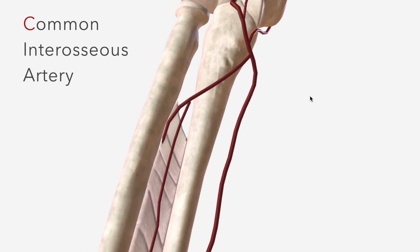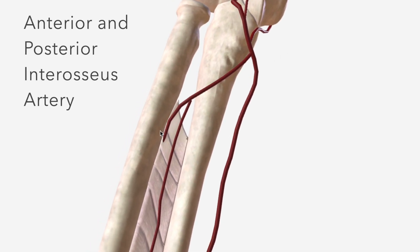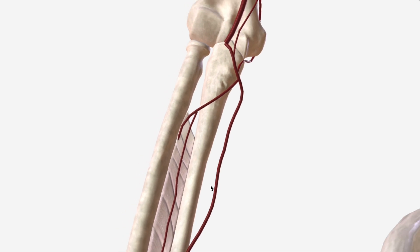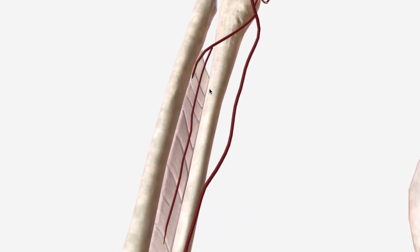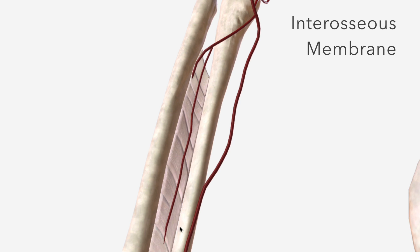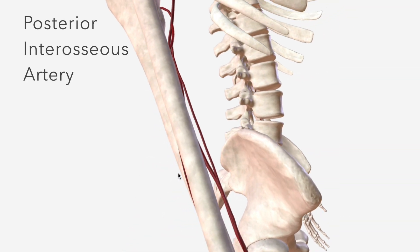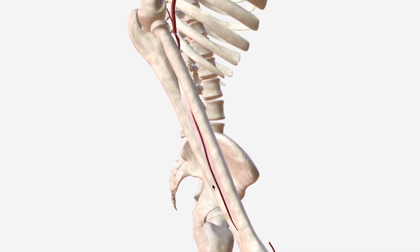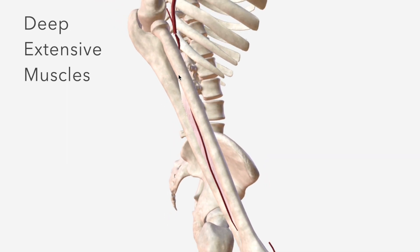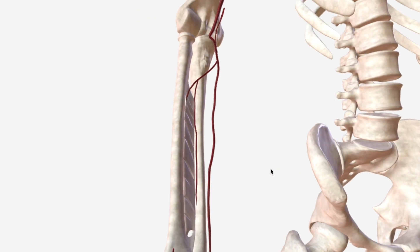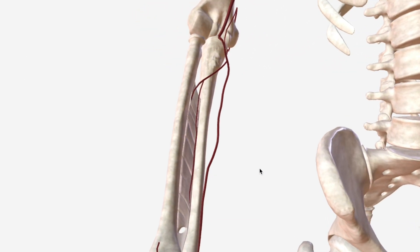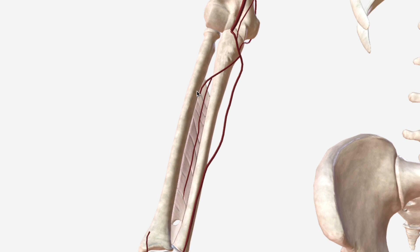Next we have the common interosseous artery, which divides to become the anterior and posterior interosseous arteries. These course down the forearm on either side of the interosseous membrane. The posterior interosseous artery supplies the extensor muscles of the forearm, particularly the deep extensor muscles, and the anterior interosseous artery supplies the deep muscles of the flexor compartment of the anterior forearm.